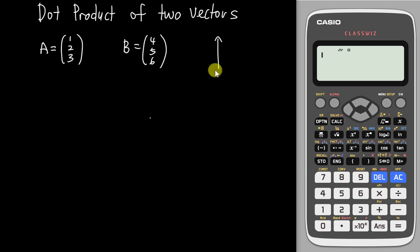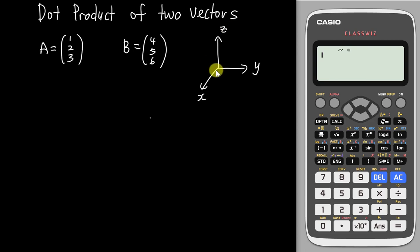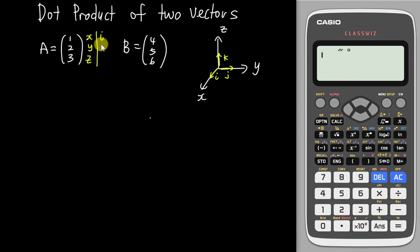If you learn about three-dimension in STPM or A-Level, you should know about vectors with axes like X, Y, and Z. The vector can go into a Cartesian plane like I, J, and K. So just imagine this is basically for the X-axis, Y-axis, Z-axis, or in Cartesian notation we call it I, J, and K. In this video I will not cover so much about three-dimensions.